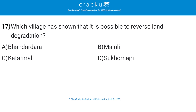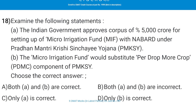Which village has shown that it is possible to reverse land degradation? The correct answer is Sukhomajri. Regarding components of PMKSY (Pradhan Mantri Krishi Sinchayee Yojana), the correct answer is A — both options A and B are correct.